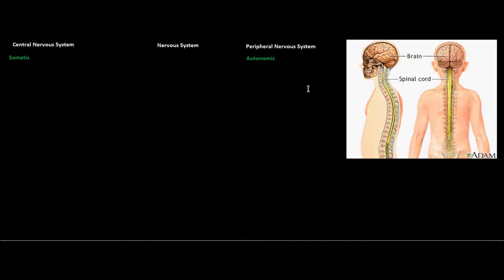When we talk about the central nervous system, we're often referring to the brain and the spinal cord. These two organs come together in order to help us interpret information and perceive things. The brain is called the master commander for a reason, because it's really important for interpreting different information that we encounter throughout the day.